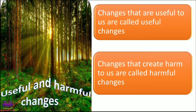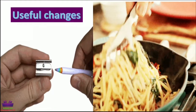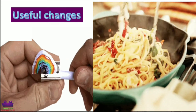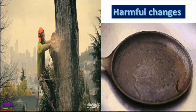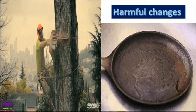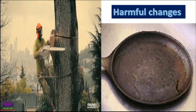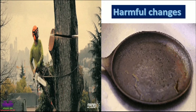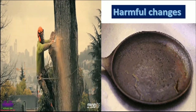The next type of changes are useful and harmful changes. Changes that are useful to us are called useful changes, whereas changes that create harm to us or are not useful to us are called harmful changes. Examples of useful changes are sharpening of a pencil and making food. Whereas, rusting of pans — these pans are made of iron, and after using them for a few years they start rusting — rusting is a harmful change. Cutting down trees is also a harmful change.